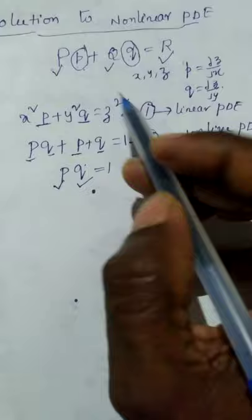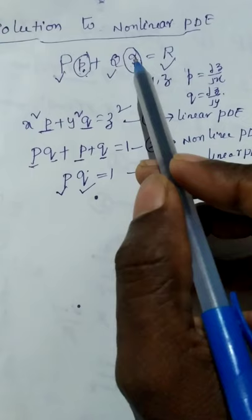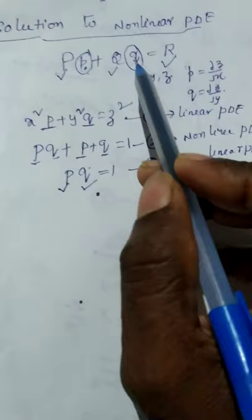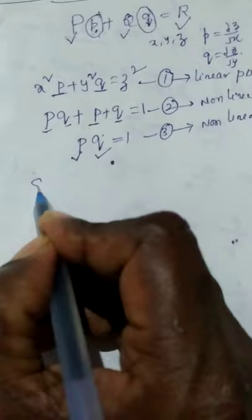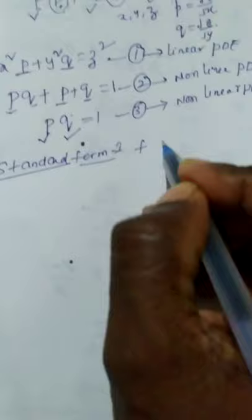So in linear partial differential equations, p and q appear only one time and they do not appear in the same term. Any partial differential equation which is not linear is called a nonlinear partial differential equation. We have four standard forms. Standard Form 1 is f(p, q) = 0.